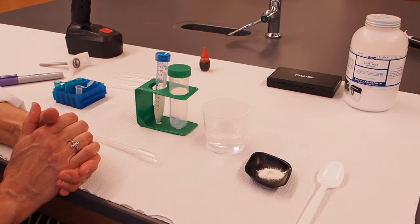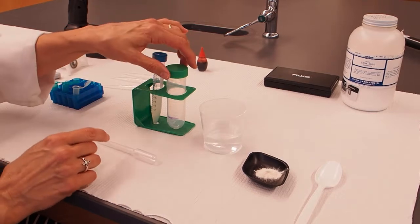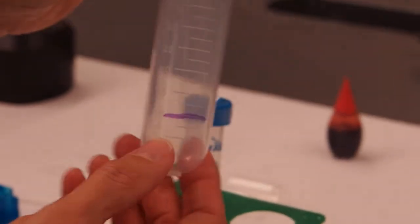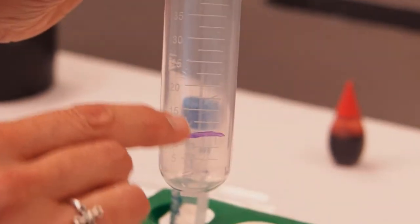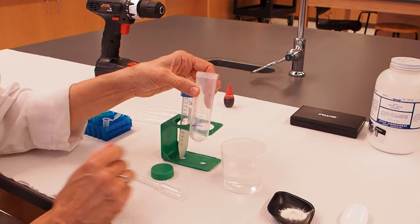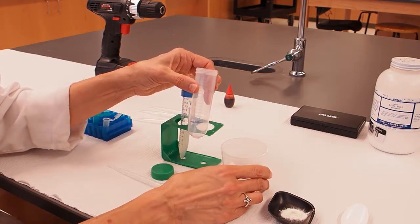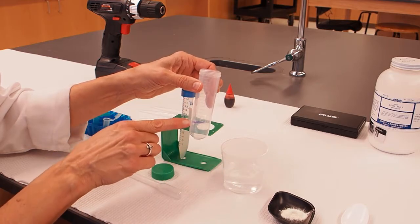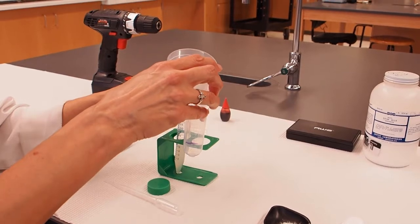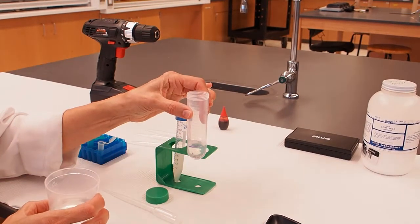The first thing we're going to do is add 10 milliliters of water to our large tube. I've marked this tube at the 10 milliliter line. You'll notice these test tubes have volume markings on them. So I'm going to add 10 milliliters of water to this tube and I've marked the 10 milliliter line so that you can see it. I'm going to pour water in to the 10 milliliter line.